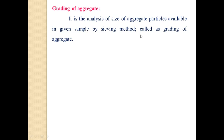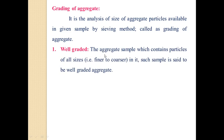It is well known that the strength of concrete is dependent upon the water-cement ratio, provided the concrete is workable. An important factor for producing workable concrete is that the grading of aggregate should be good. Good grading implies that the aggregate sample contains all standard size fractions in required proportions such that the sample contains minimum voids. It is further classified as well graded, uniformly or poorly graded, and gap graded aggregate.